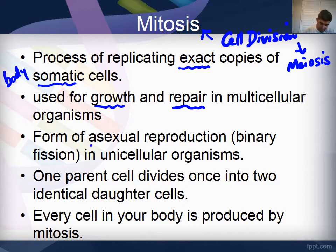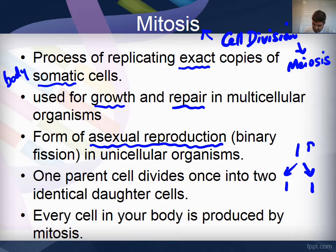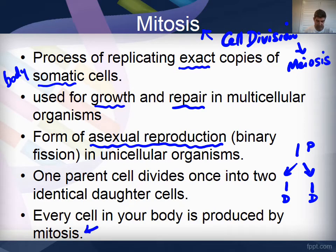Mitosis is also a form of asexual reproduction, or binary fission — splitting into two — in unicellular organisms. The important thing about mitosis is one cell splits into two cells and the two cells are identical. The first is called the parent and the resulting cells are called the daughter cells, and the daughter cells are identical to the parent — that is, they have the same number of chromosomes. Every cell in your body is produced as a consequence of mitosis.